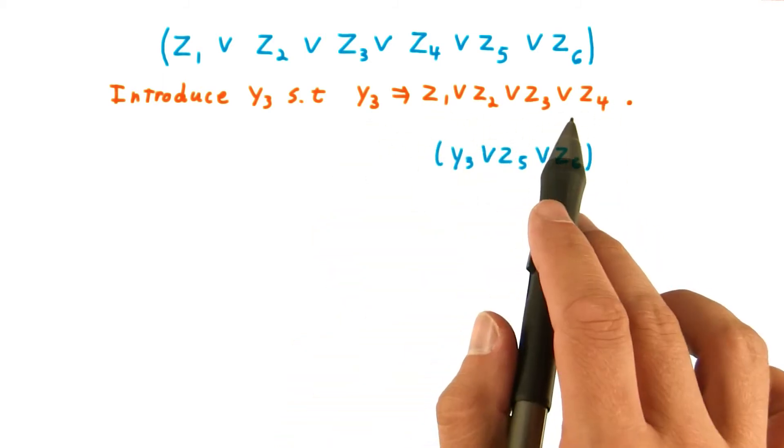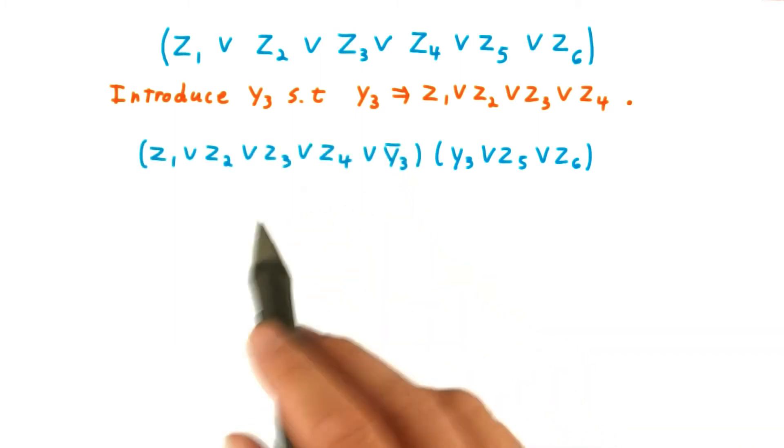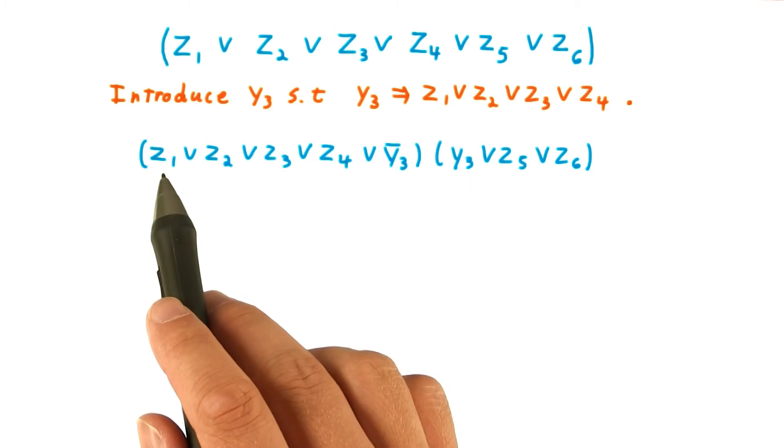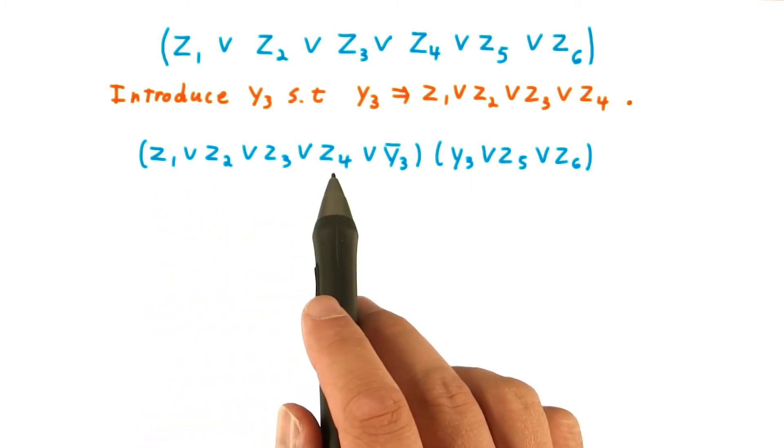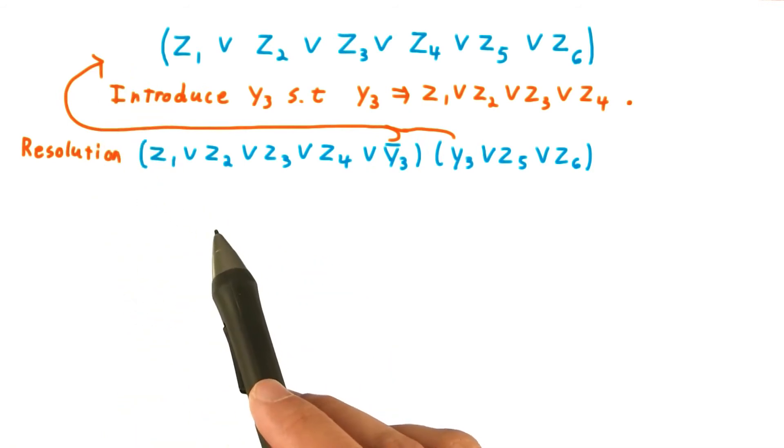This idea is easy to express as a clause. Either Y3 is false, in which case the implication doesn't apply, or one of Z1 through Z4 better be true. Together, these two clauses imply the first one.